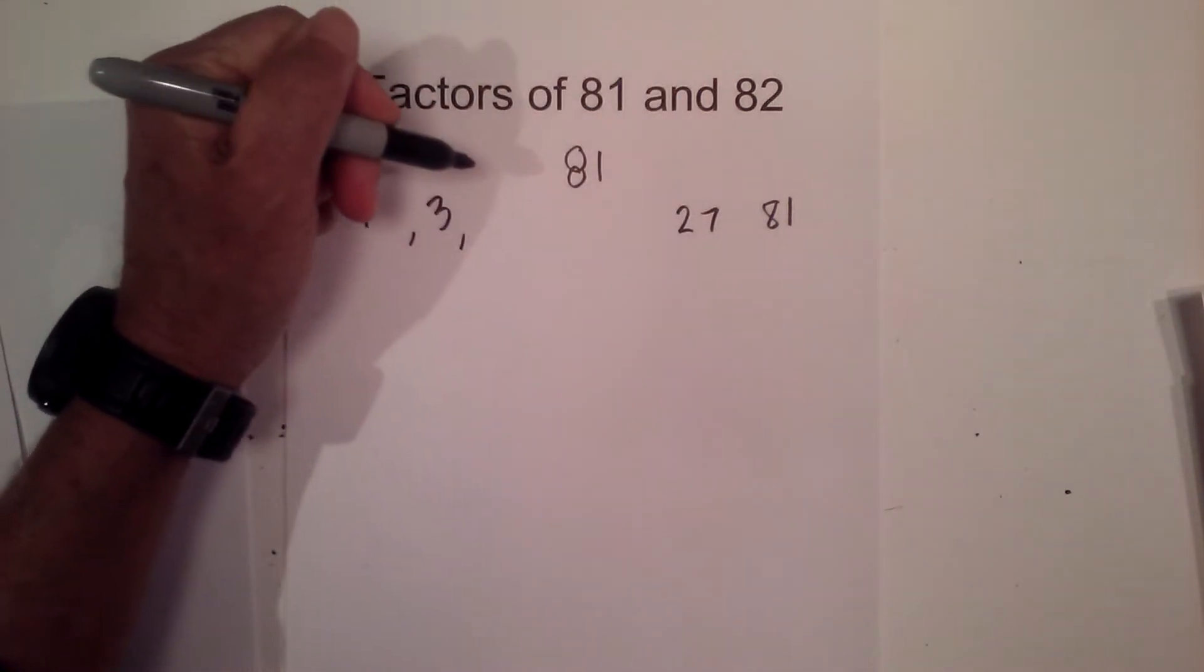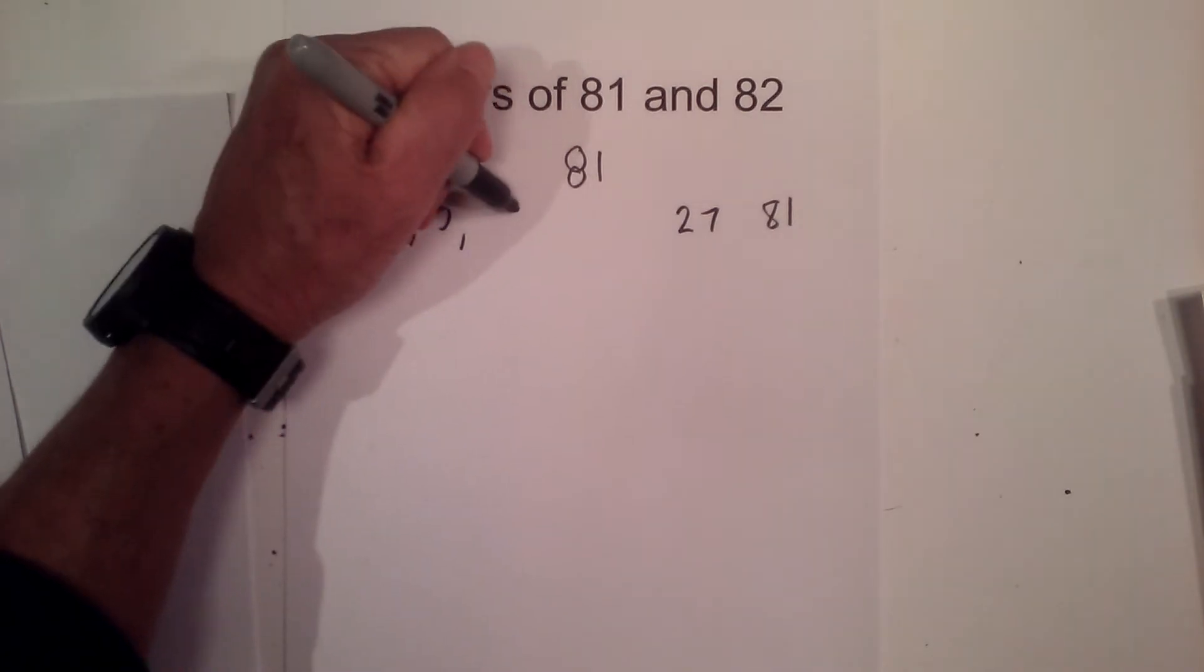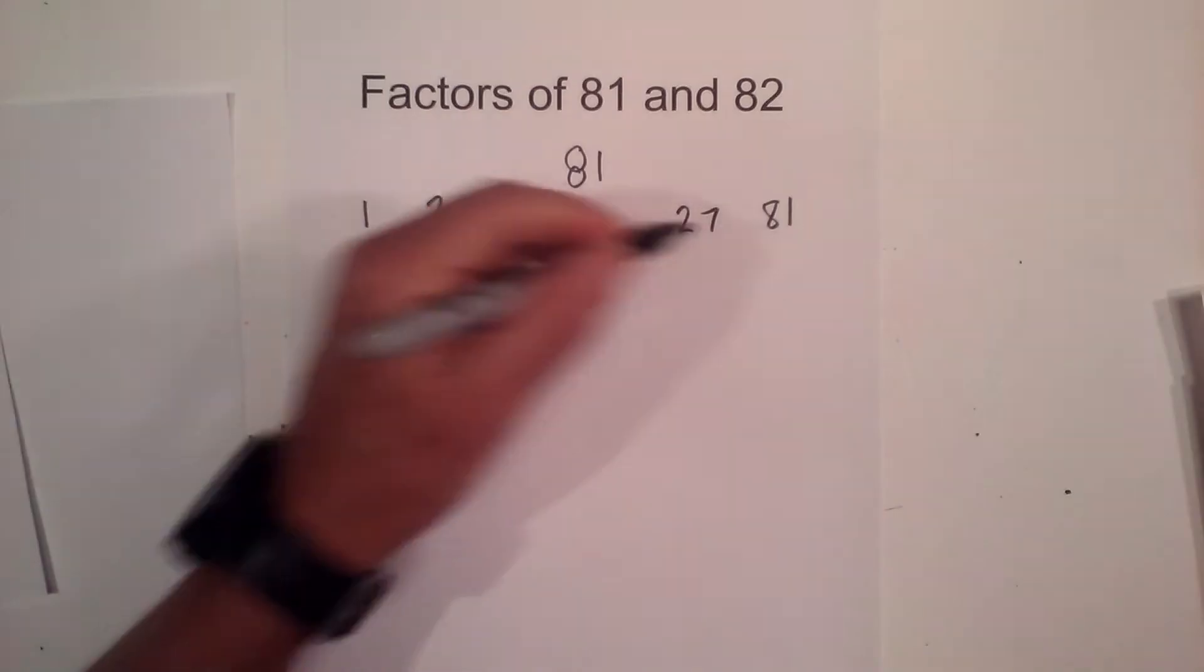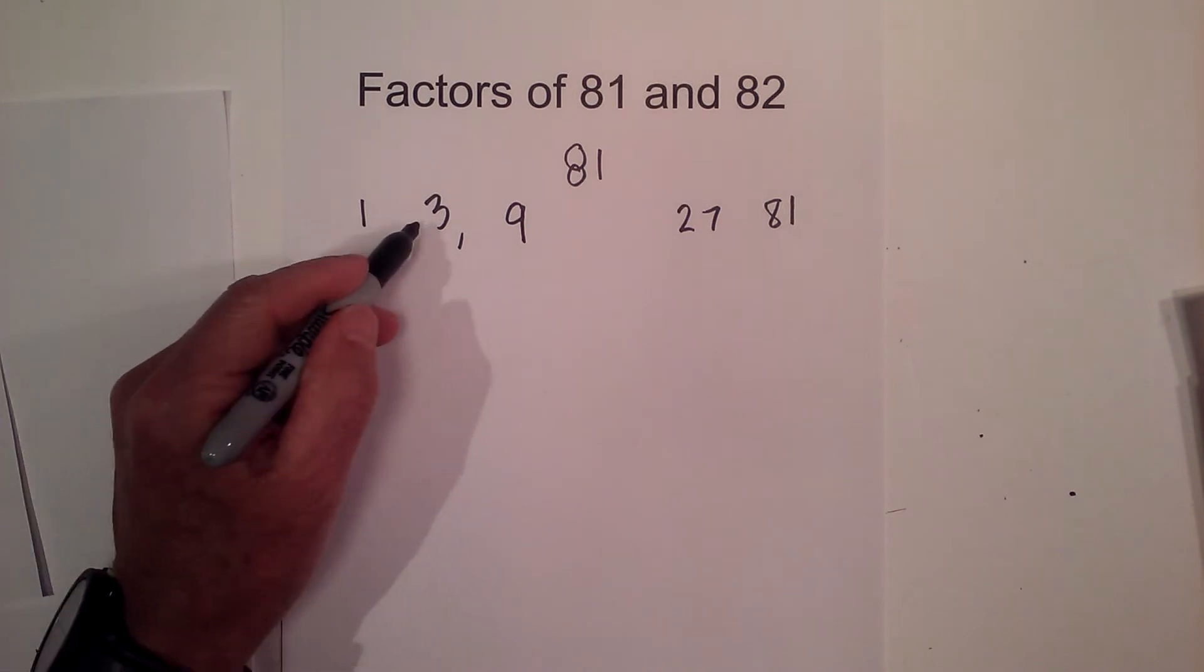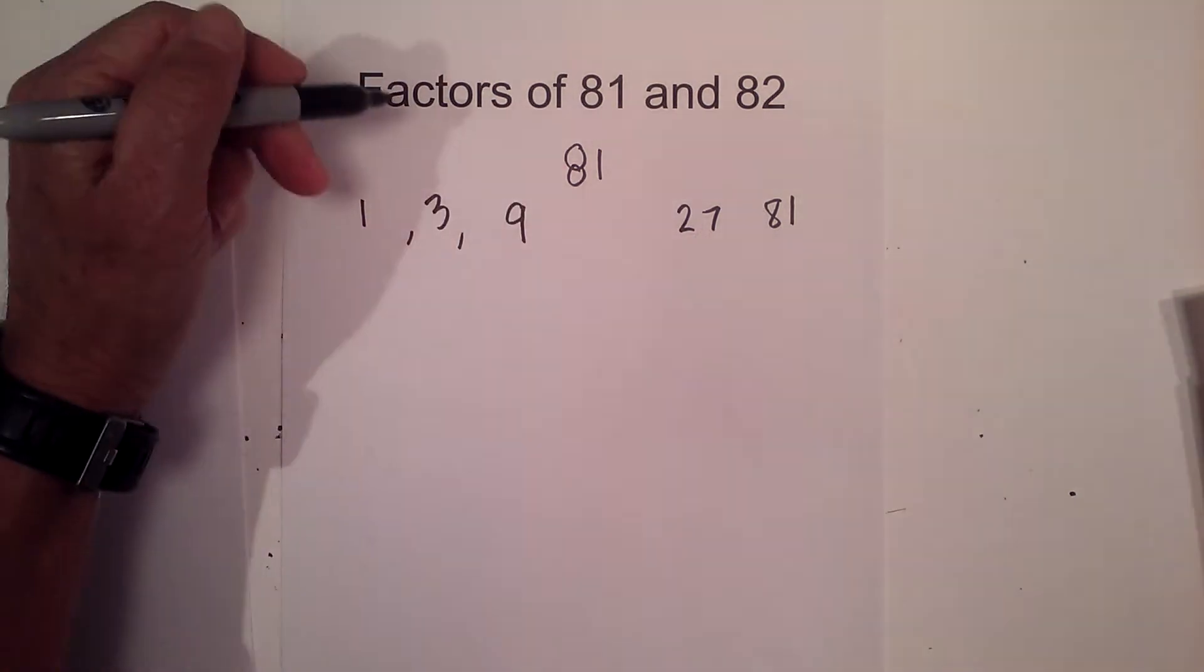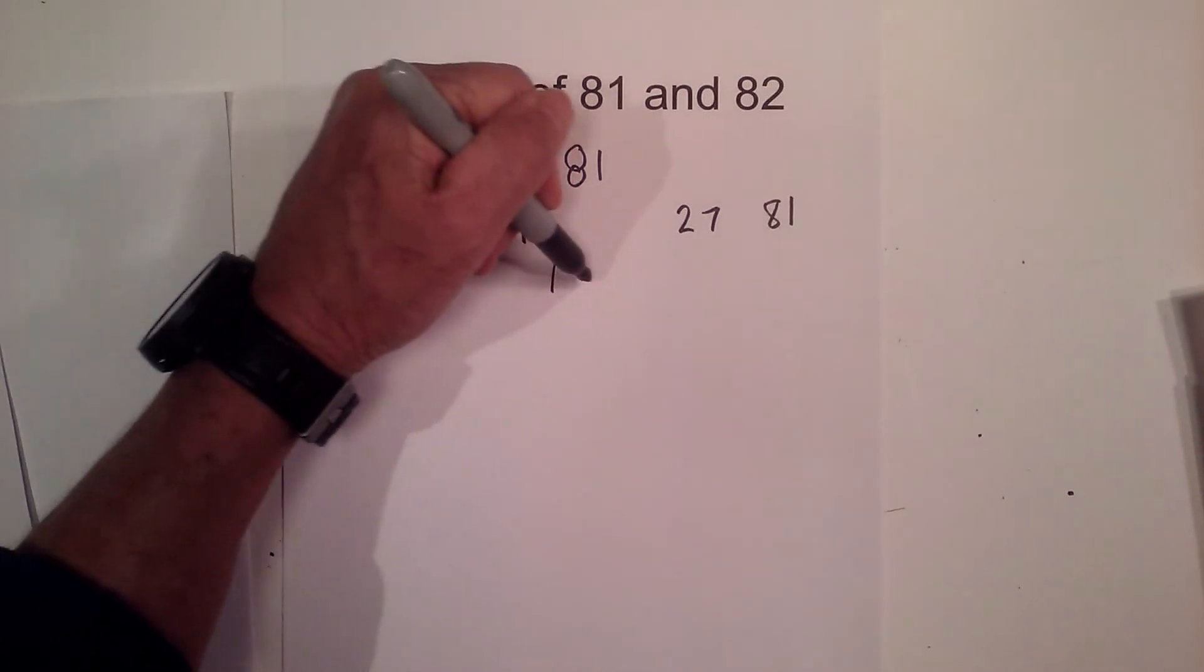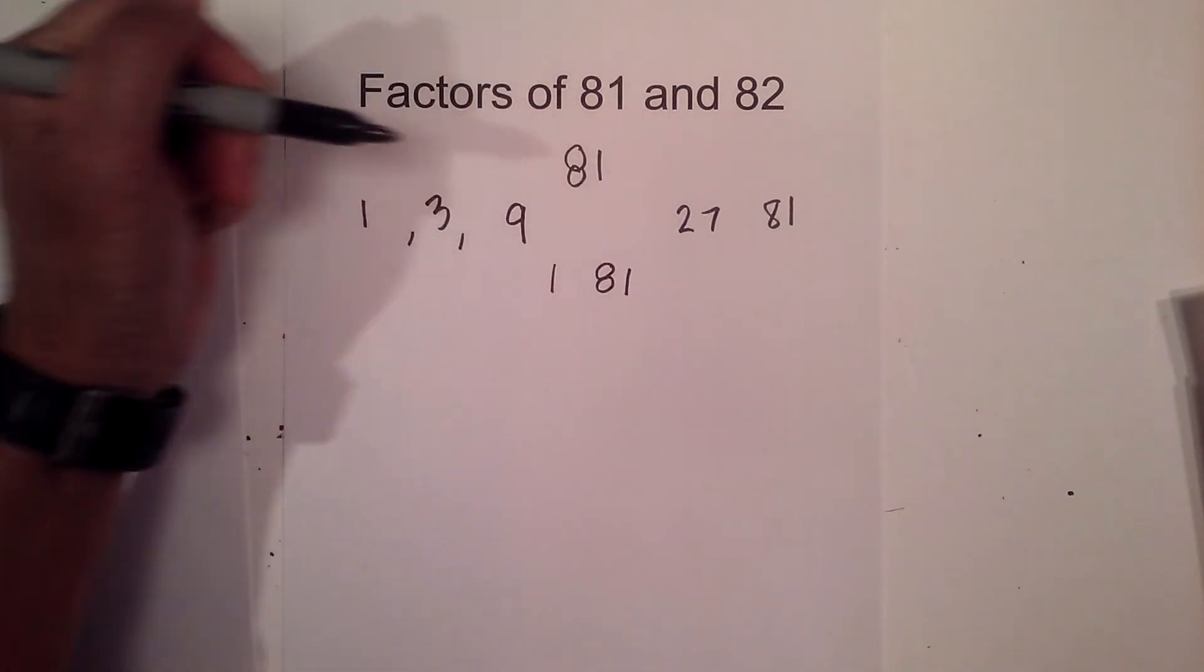4 does not go in, 5, 6, 7, 8, but 9 times 9 equals 81. I won't write it twice. So the factors are 1, 3, 9, 27, 81. If you'd like them in pairs that are multiplied together, we have 1 and 81, 3 and 27, 9 times 9.